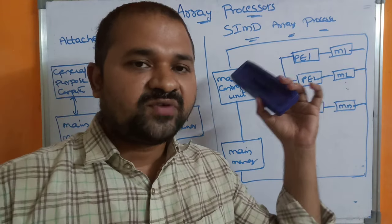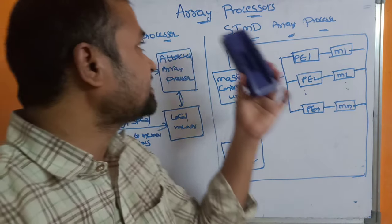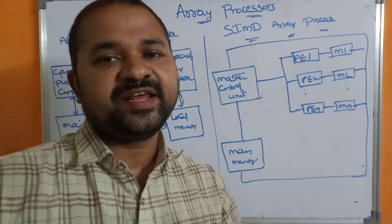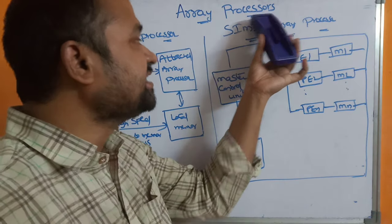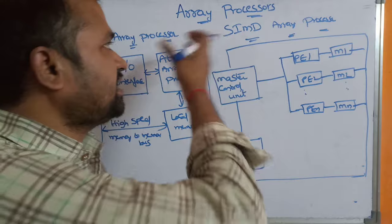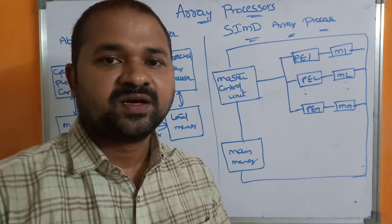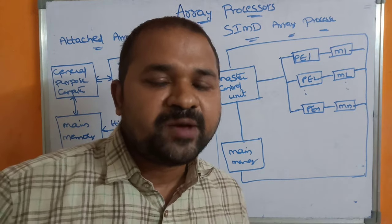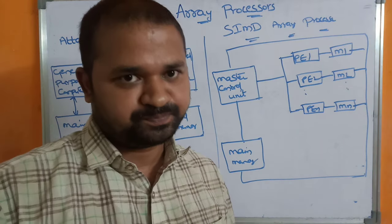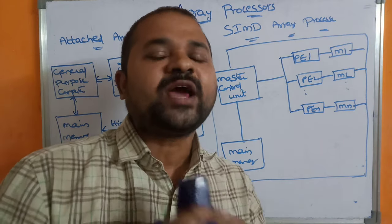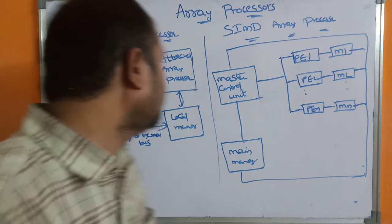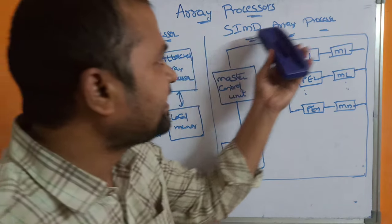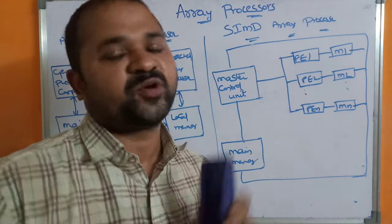In this video, we are going to discuss about array processors. The name itself specifies the meaning — instead of a single processor, we have a collection of processors. Array processors are mainly useful in order to improve the performance of a system. There are two types of array processors: the first one is the attached array processor, and the second one is the SIMD array processor.